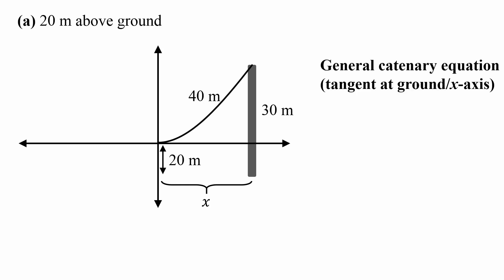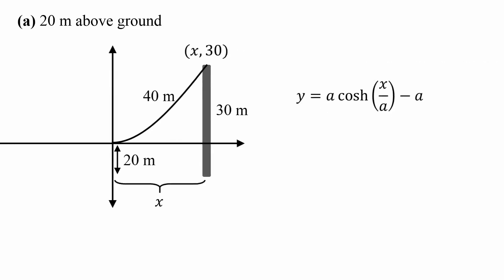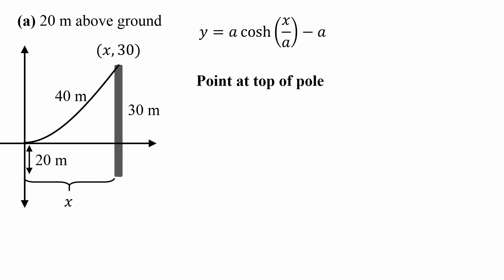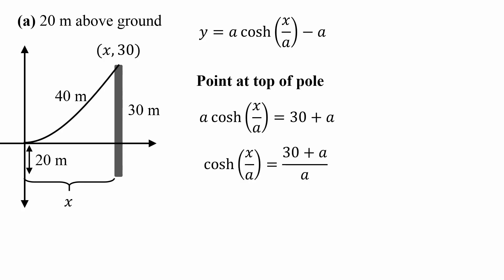We want to calculate the horizontal distance x. The general catenary equation that's tangent to the x-axis takes the form: y = a·cosh(x/a) − a. The top of the pole in this diagram will be at the coordinate (x, 30), so we use that point to get one equation. This simplifies to: a·cosh(x/a) = 30 + a. Dividing both sides by a gives: cosh(x/a) = (30 + a)/a.